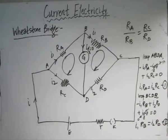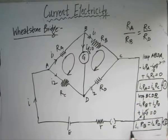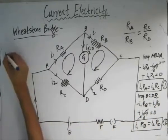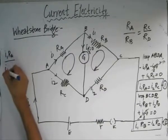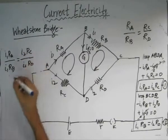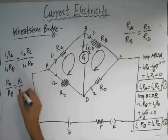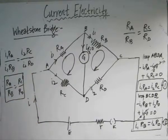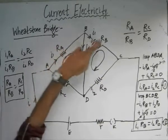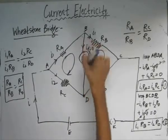This is relation two. Now looking at relations one and two, if we divide equation one by equation two, we get I1·Ra divided by I1·Rb equals I2·Rc divided by I2·Rd. This reduces to Ra/Rb = Rc/Rd. This is the important principle of the Wheatstone Bridge: if the resistances are connected in this ratio, then there will be no deflection in the diagonal branch.